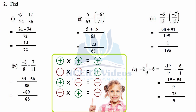Second part of Question 2. We review the sign rules: minus minus equals plus. In multiplication and division, same signs give plus; different signs give minus. So 5/63 − (−6/21) becomes 5/63 + 6/21. LCM: 63 ÷ 21 = 3, so LCM = 63. (63/63) × 5 = 5, plus (63/21) × 6 = 18. Adding: 5 + 18 = 23. Answer: 23/63, not further reducible.